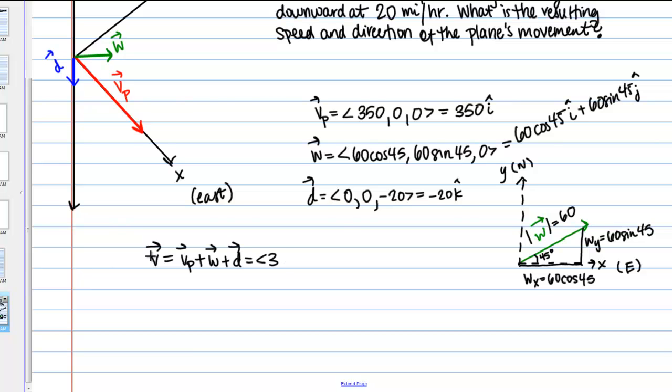Okay, so we're going to be adding just by components here. These three vectors. And if I do that for my resulting X component I'm going to get 350 plus 60 cosine 45. For my Y component 60 sine 45. And for my Z component negative 20.